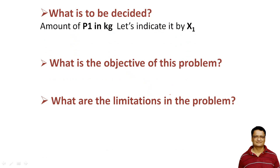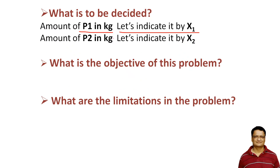The first question: what is to be decided? If you read the problem carefully, you can see that the amount of P1 in kg is to be decided — how much P1 is to be manufactured in kg. Let us indicate it by x1. Also, we need to decide the amount of P2 in kg; let us call it x2.